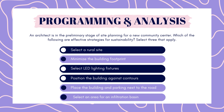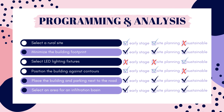The correct answers are: minimize the building footprint, place the building and parking next to the road, and select an area for an infiltration basin. We have to pay attention to the keywords here: preliminary stage, site planning, and sustainability. There are a few options that are sustainable but are not considered during the preliminary stages of site planning specifically. In the early stages we want to minimize the building footprint so we're not taking up more land than necessary, place the building and parking as close to the road as possible to avoid paving a long unnecessary driveway and leave more land undisturbed, and save space for an infiltration basin which catches stormwater and retains it until it naturally seeps back into the ground, reducing the amount of stormwater added to the stormwater system.